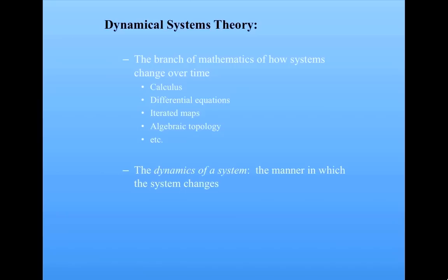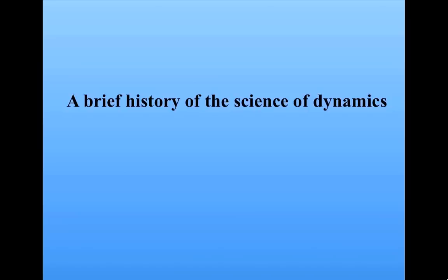The dynamics of a system refers to the manner in which the system changes. Dynamical systems theory gives us a vocabulary and a set of mathematical tools for describing dynamics. In the West, the study of dynamics really started with Aristotle. Aristotle believed that there were two separate sets of laws: one set for Earth, where objects move in straight lines only under force and things fall to the ground at a rate depending on how heavy they are, and a separate set of physical laws for the heavens — for example, other planets and the Sun orbit in perfect circles around the Earth. Aristotle based his views on logic and common sense and some naive observation; he didn't really see the need to do systematic experiments.